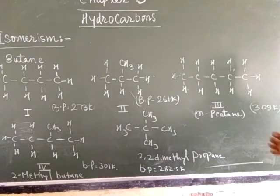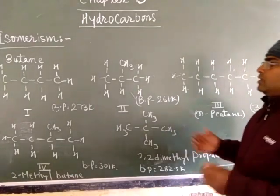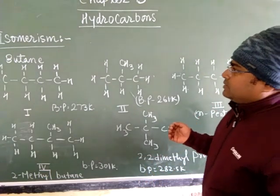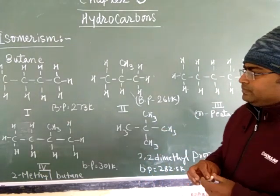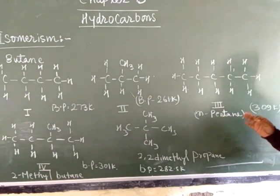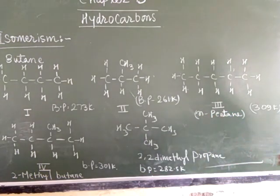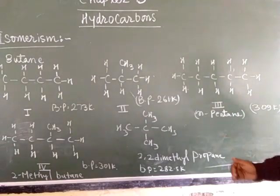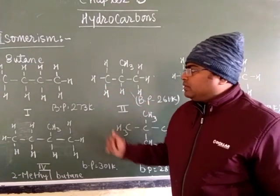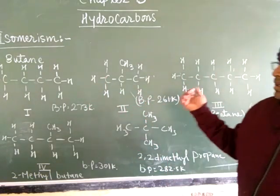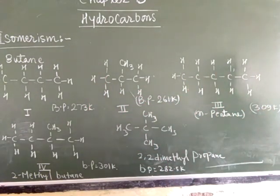Once again I will repeat: compounds having the same molecular formula but different structure are called isomers. Methane and propane have no isomers. Isomers start from carbon number four, that means butane, pentane, and hexane will have isomers.